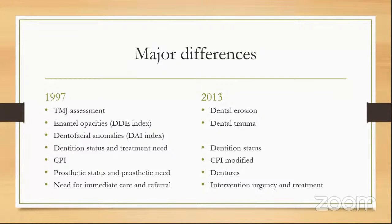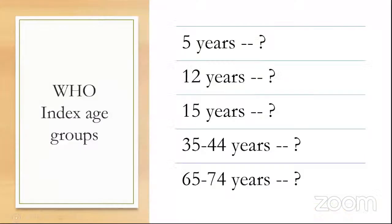Further differences: in 1997 it was 'dentition status and treatment needs' whereas in 2013 it is only dentition status. The CPI index in 1997 was slightly modified to a CPI modified index in 2013. In 1997 there was prosthetic status and prosthetic need, whereas in 2013 it covers only dentures. The last part of both forms covers intervention and referral — in 1997 called 'need for immediate care and referral,' whereas in 2013 it is called 'intervention urgency and treatment.'